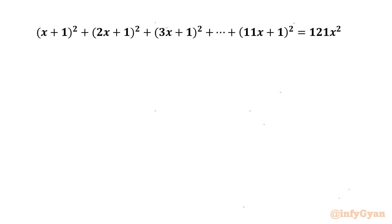Welcome back to Infigyan, my dear friends. In today's video we have another very interesting question from quadratic equations. The given equation is (x+1)² + (2x+1)² + (3x+1)² up to (11x+1)² equal to 121x².